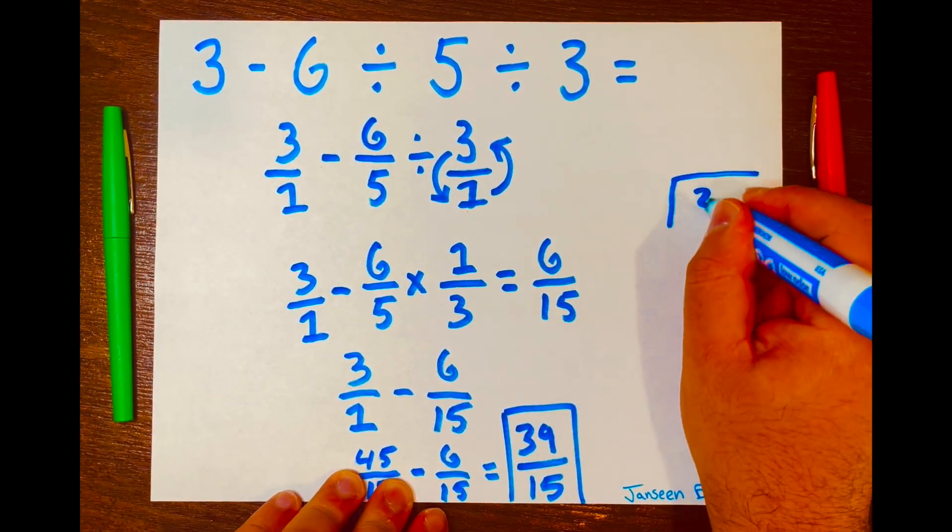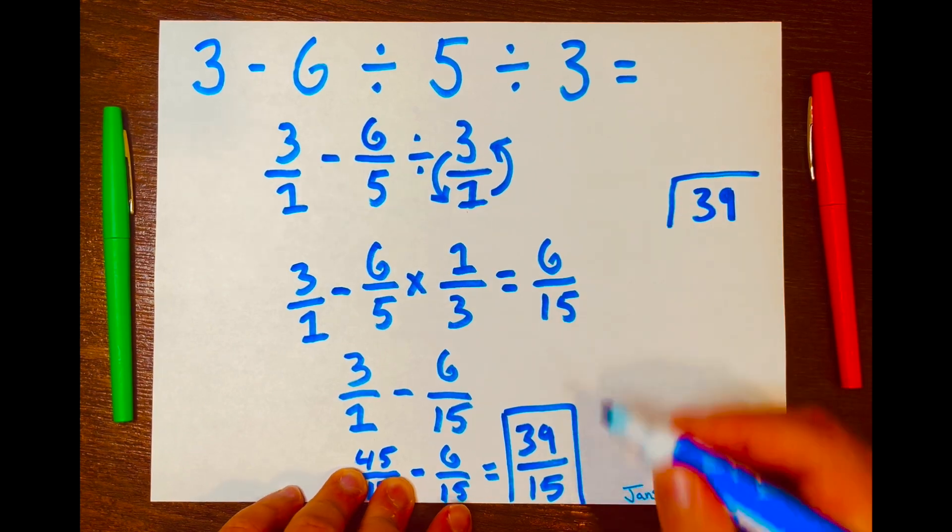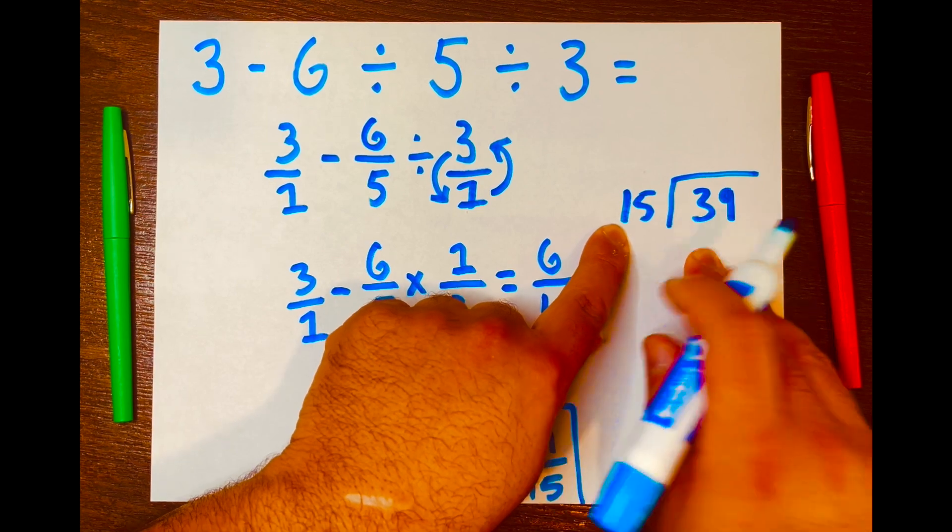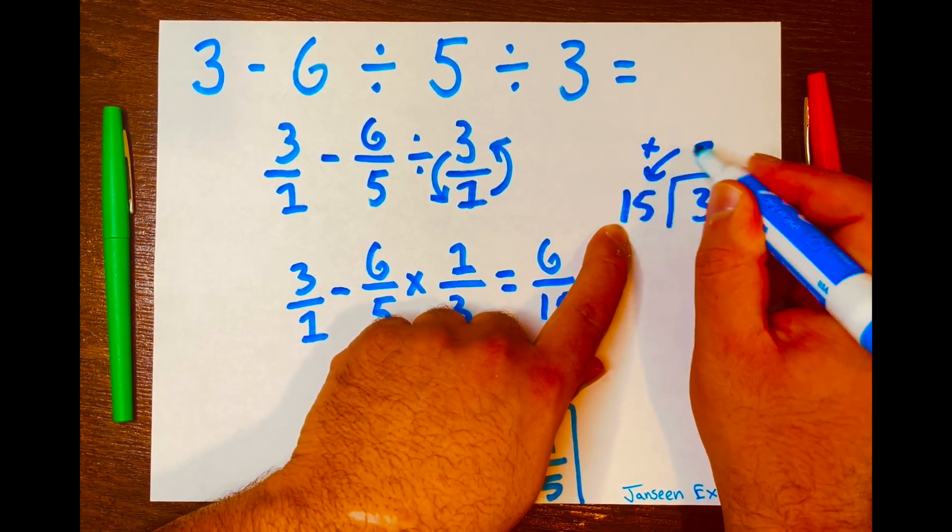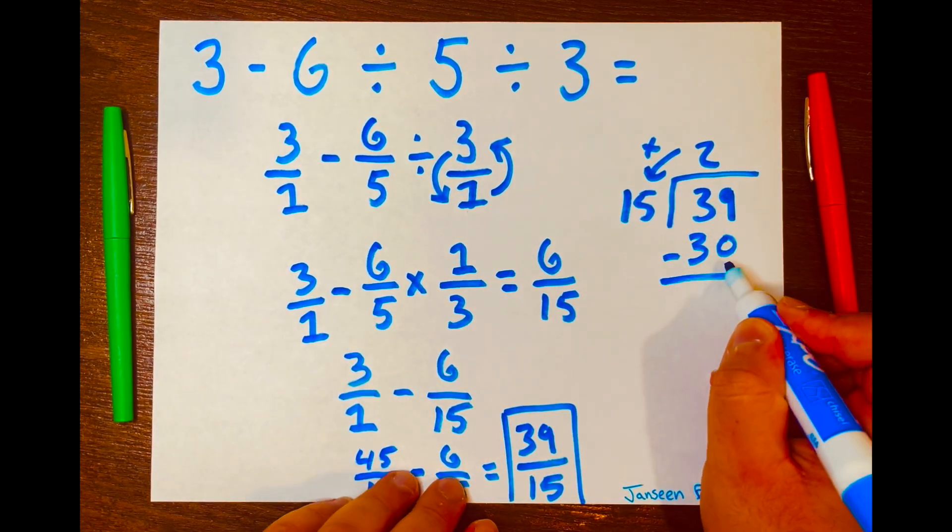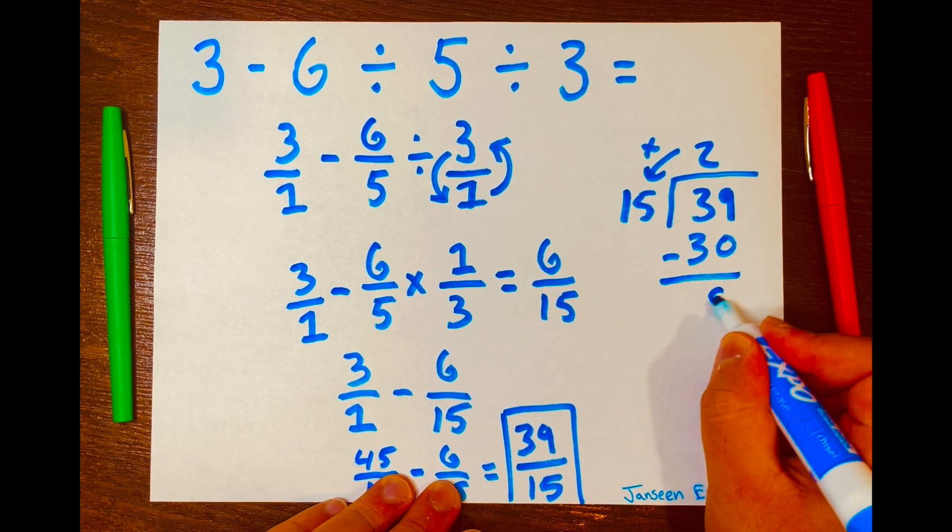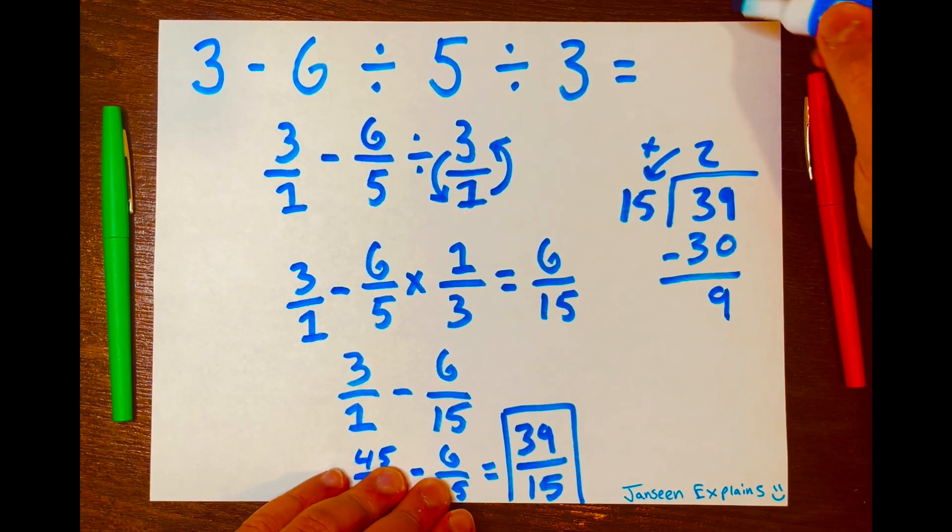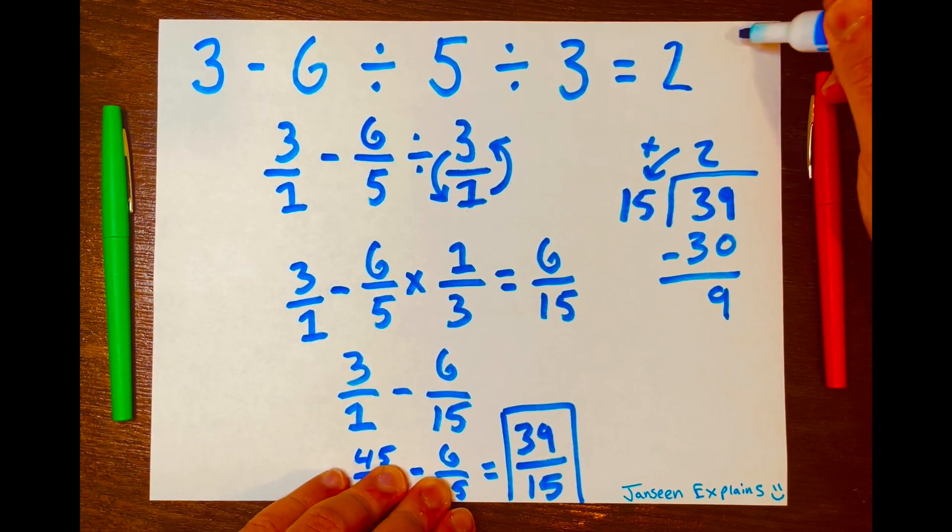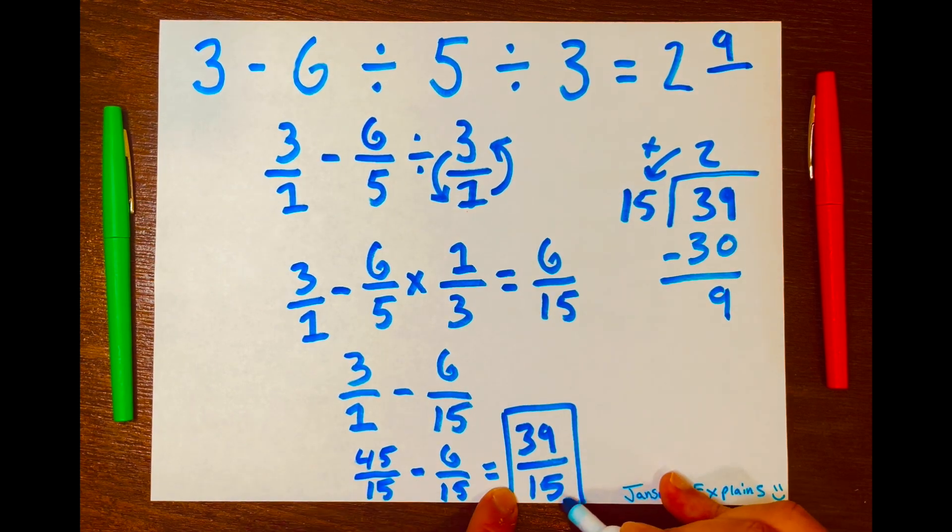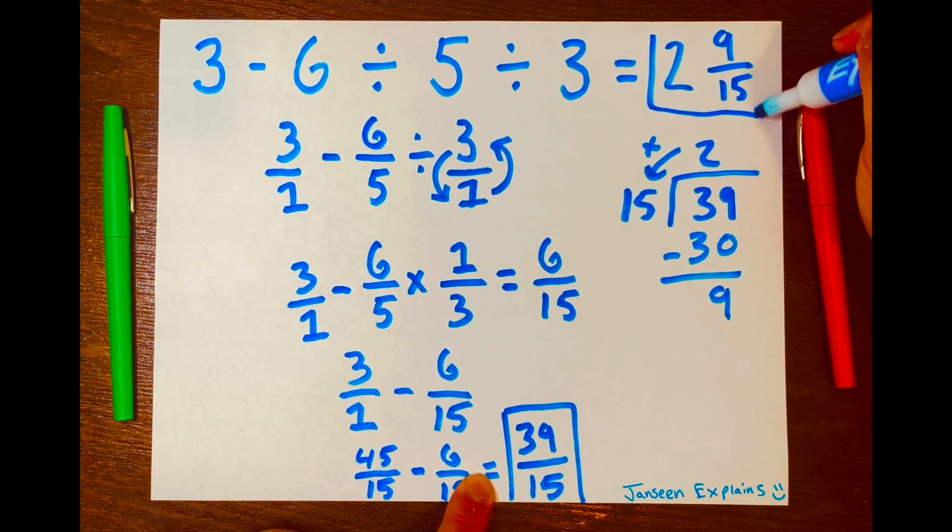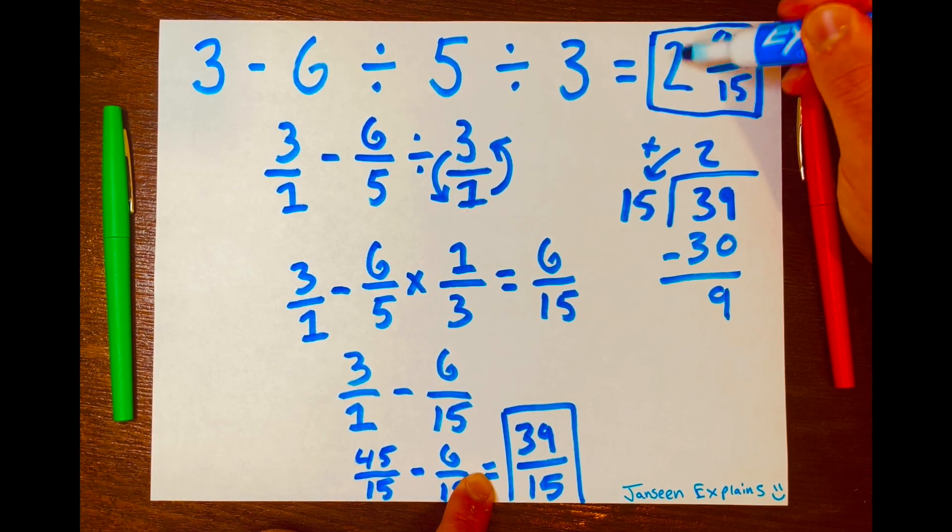So we're going to use long division. 39 will be your dividend, 15 will be your divisor. So how many times can 15 fit into 39? Two times. Then you multiply 2 times 15, that is 30. And then 39 minus 30 is 9. So your mixed number answer is 2 as the whole number, 9 as your remainder over your new denominator 15. And there you go, that is your answer as a mixed number.